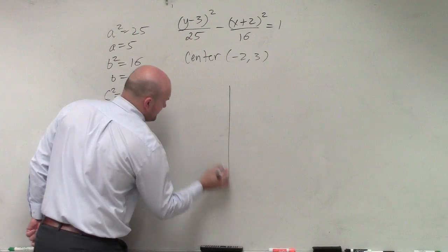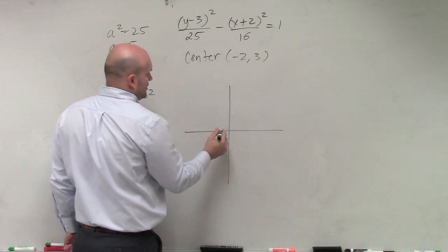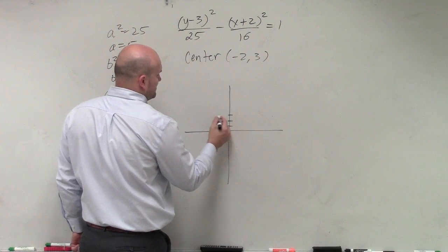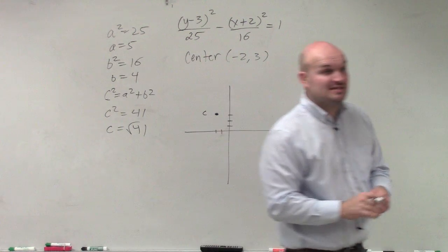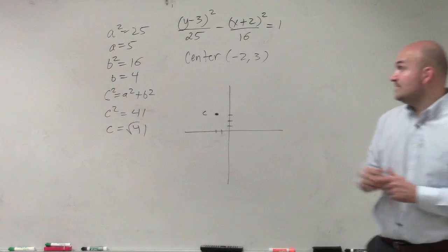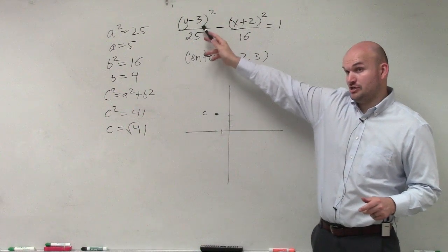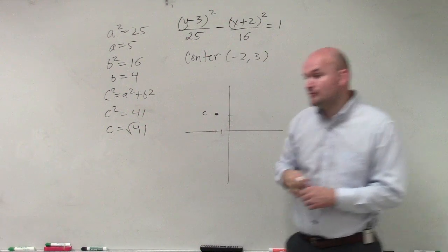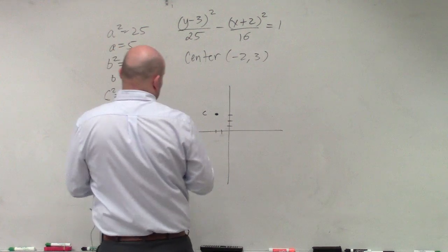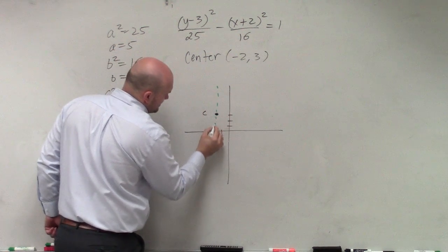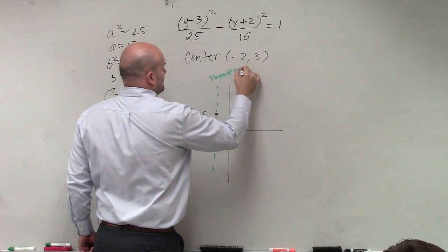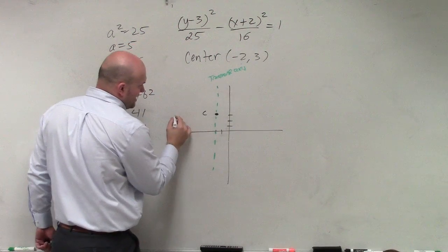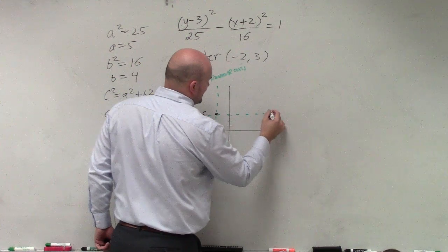Let's graph our center here. One, two, one, two, three. There's my center. Since a² is under y, the transverse axis is vertical. I'll sketch that and label it as my transverse axis. This is my conjugate axis.